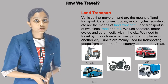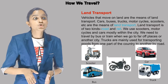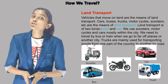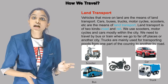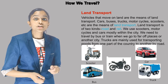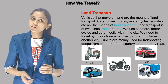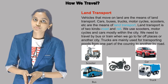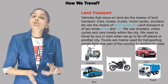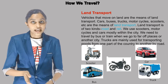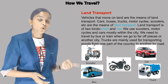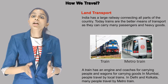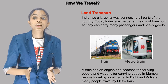Land transport उसे कहा जाता है जो वाहन जमीन पे चलते हैं, हम उन्हें land transport कहते हैं। जैसे कार, बस, ट्रक, मोटरसाइकल, स्कूटर — ये सब हमारे land transport हैं। Land transport दो तरीके के होते हैं — एक रोड पर चलते हैं और दूसरे जो रेल पर चलते हैं।